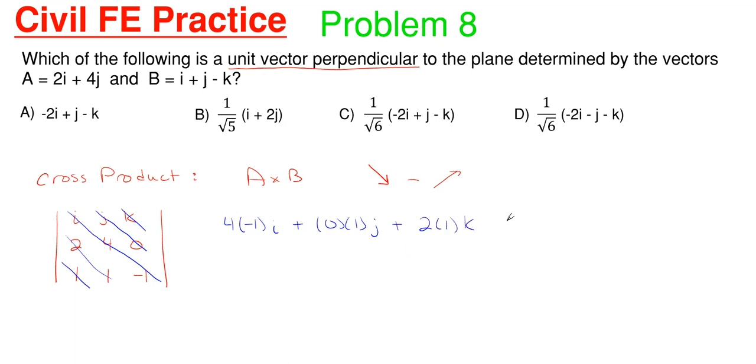All righty. So this just simplifies down to minus 4I plus 2K because J is 0.